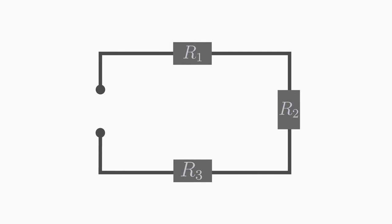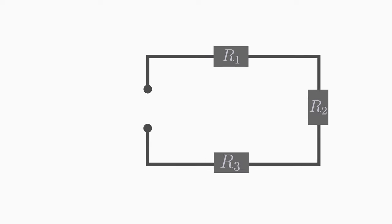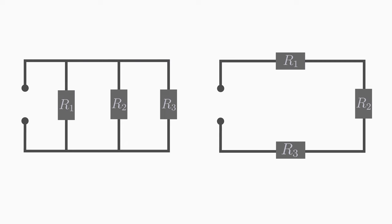What is the difference between a series and a parallel connection of resistors? Here we consider a series and a parallel circuit with three resistors with resistances R1, R2, and R3. A voltage U is applied to the resistors.